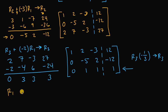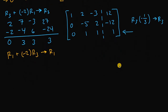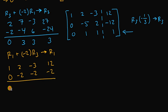Now I can take row 1 and add to it negative 2 times row 3 to get a new row 1. That's what's really powerful about having rows with a positive 1. Row 1 is 1, 2, negative 3, and 12. Negative 2 times row 3 gives 0, negative 2, negative 2, negative 2. Adding these two rows together gives 1, 0, negative 5, and 10. I'll go ahead and rewrite that augmented matrix.